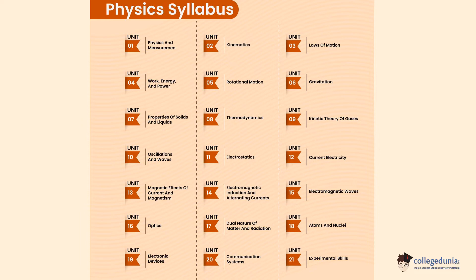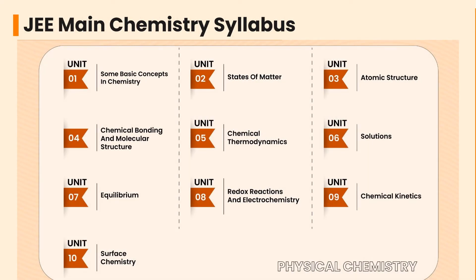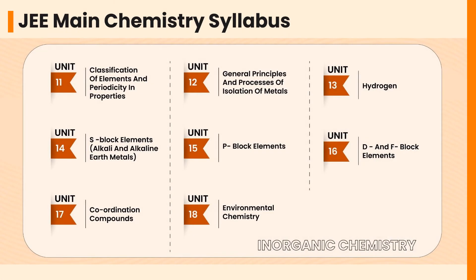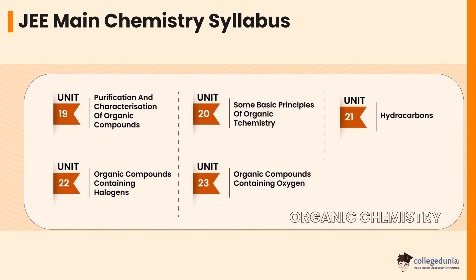All units are important for the exam. In the Chemistry syllabus, you need to cover Physical Chemistry, Organic Chemistry, and Inorganic Chemistry. In Physical Chemistry, a total of 10 units are to be covered such as Some Basic Concepts of Chemistry, States of Matter, Atomic Structure, and many more. In Inorganic Chemistry, a total of eight units are to be covered such as Classification of Elements and Periodicity in Properties, Hydrogen, P-Block Elements, D and F Block Elements, Coordination Compounds, and Environmental Chemistry. In Organic Chemistry, a total of five units are to be covered such as Purification and Characterization of Organic Compounds and Some Basic Principles of Organic Chemistry, Hydrocarbons, and more.